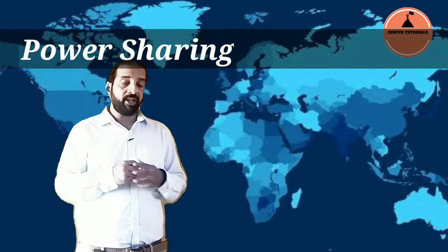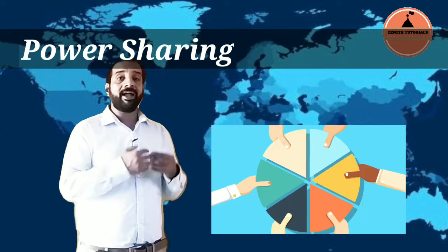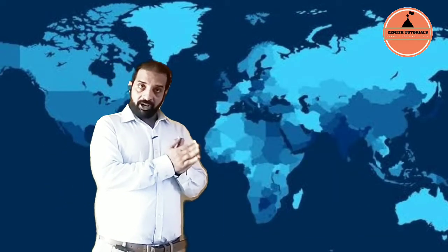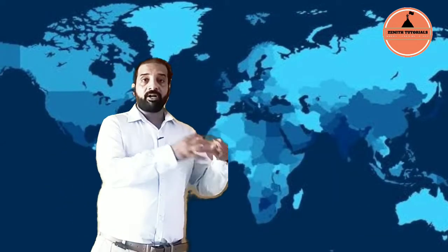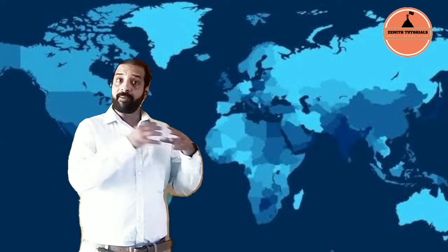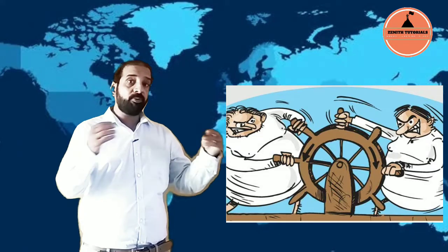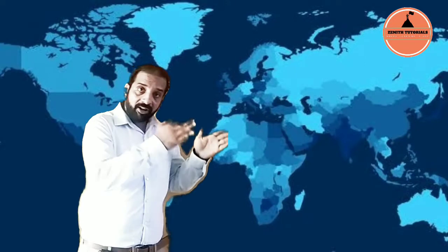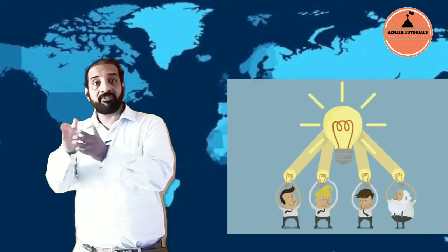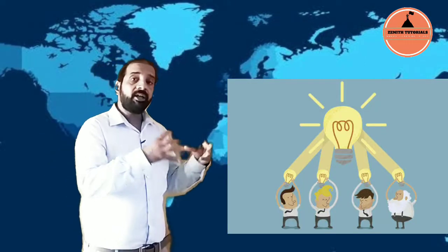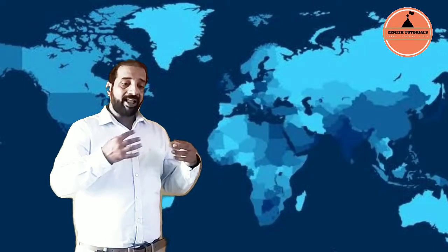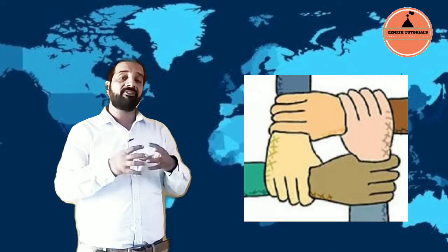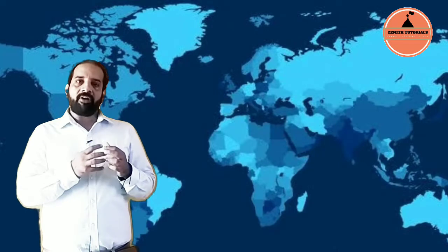Now, what is power sharing? Power is held by a government of different countries. In every country there are different social groups, cultural groups, and religious groups. So there is a huge possibility that there could be conflict while running the government. Hence power is equally divided between different organs so that the country can run properly and different beliefs and cultural communities can coexist and live with peace and harmony.